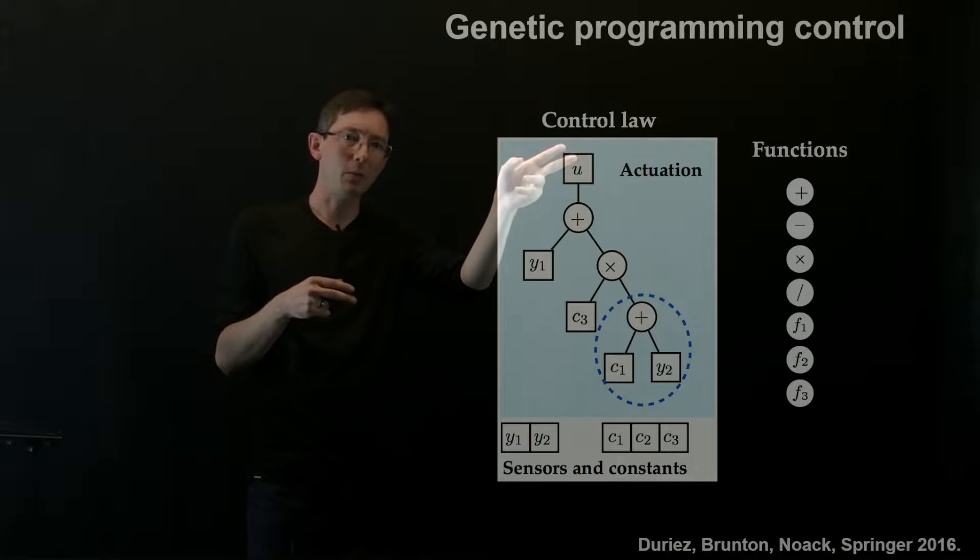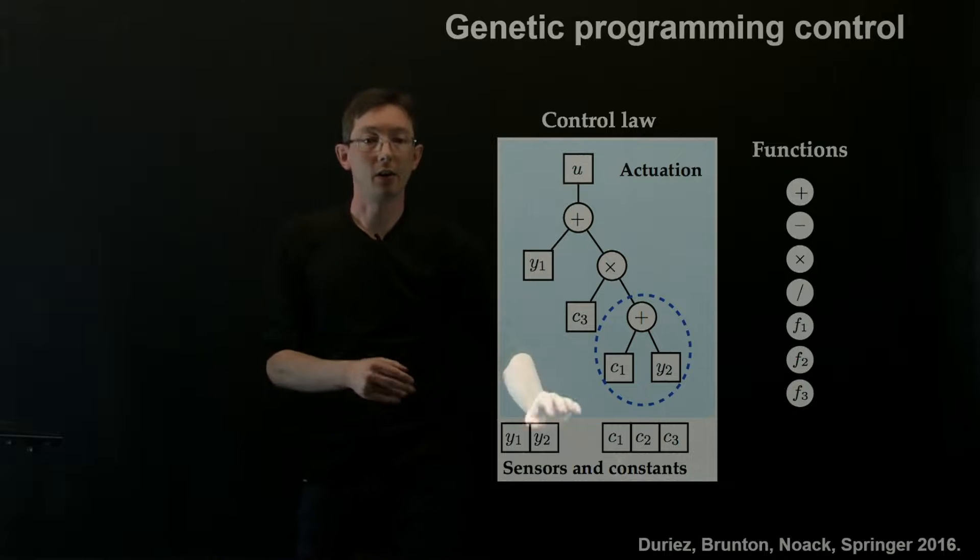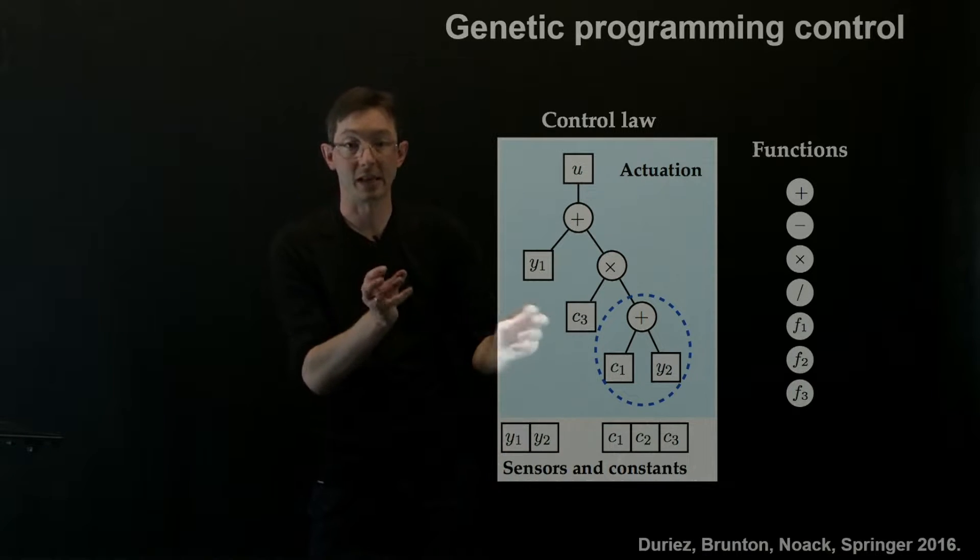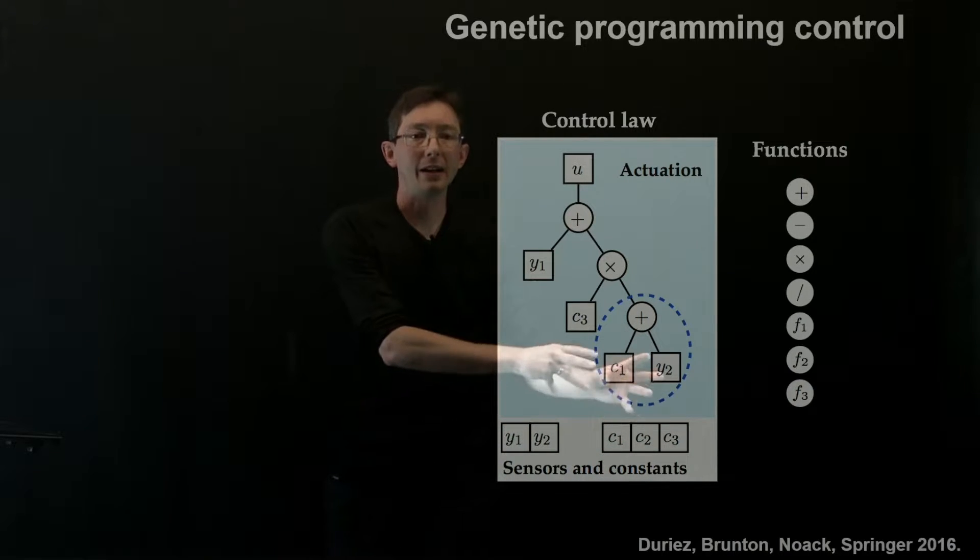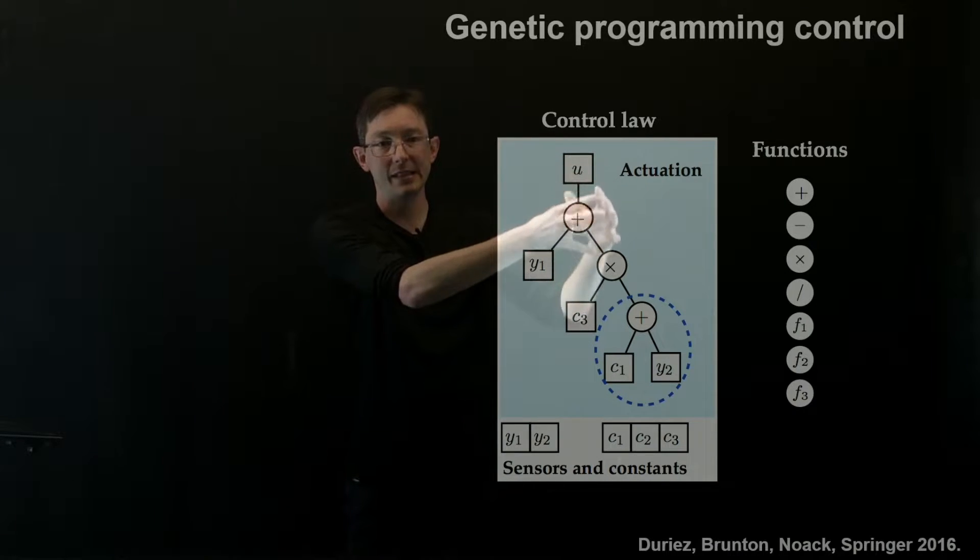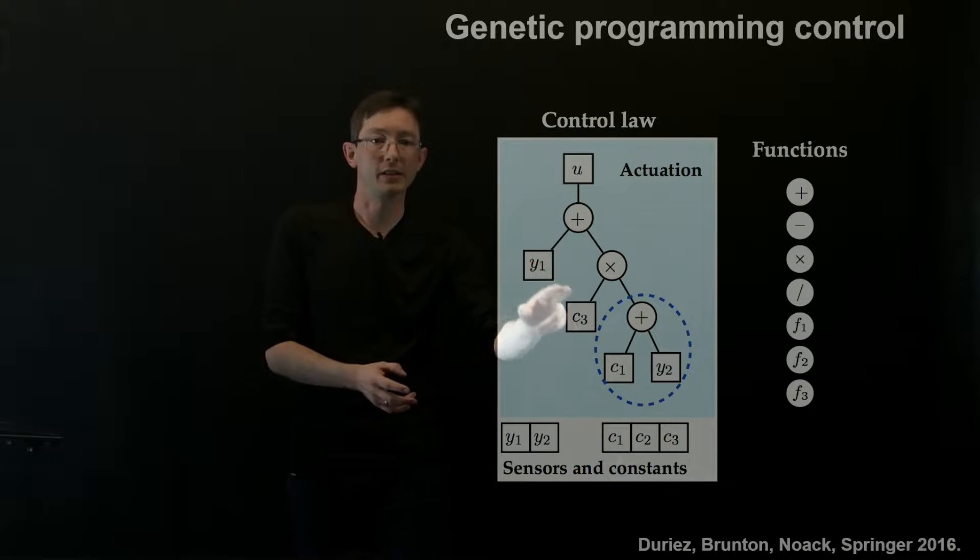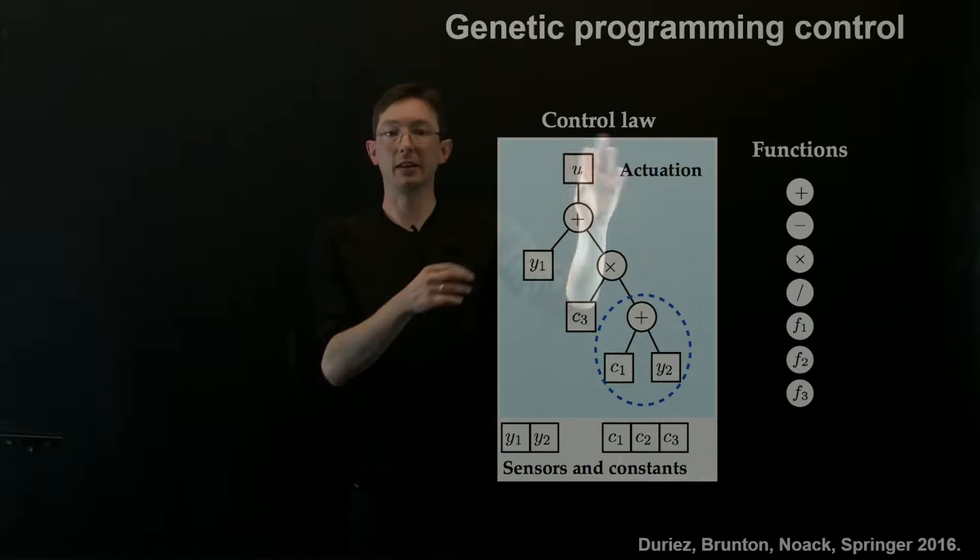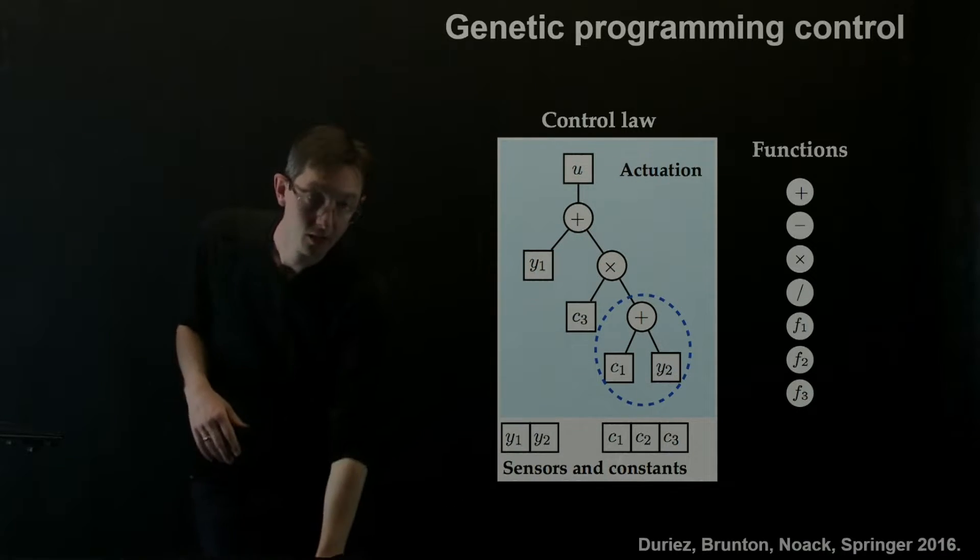And so here what we're going to do is we're going to define the structure of a control law. There are some sensors y, these are my measurements of my system. I have some sensors and maybe some constants, some numbers that I get to use. And I'm going to define my actuation signal as this nested function tree where the leaves are sensors and constants. And then there are these function operations that compositionally give me some u equals f of y.